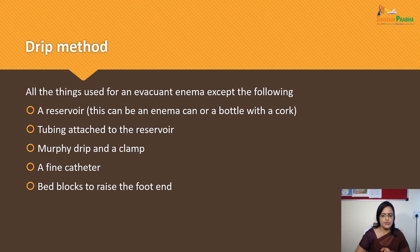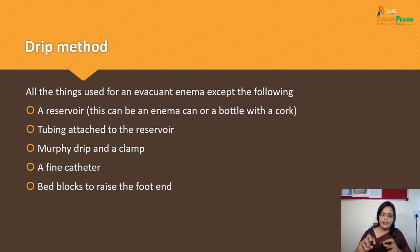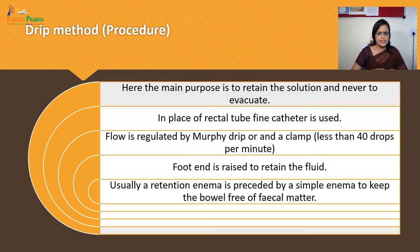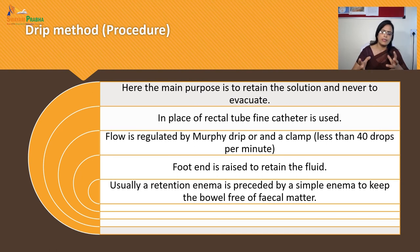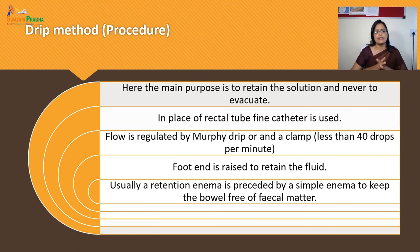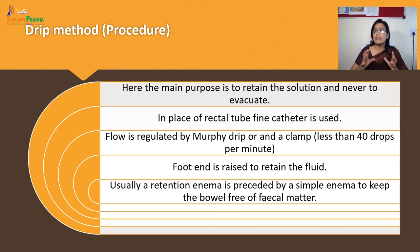For the drip method, the requirements include a reservoir (enema can or bottle with cork and tubing), a Murphy drip, a clamp, and a fine catheter. The procedure involves administration of retention Enema by the drip method; the main purpose is to retain the solution. The flow is regulated, and the retention Enema is preceded by a simple Enema to keep the bowel free of fecal matter.